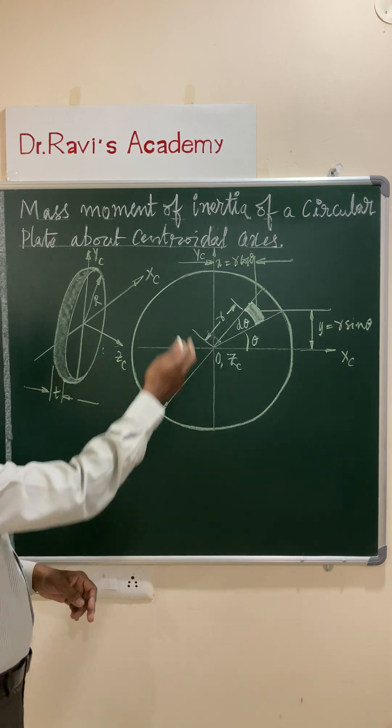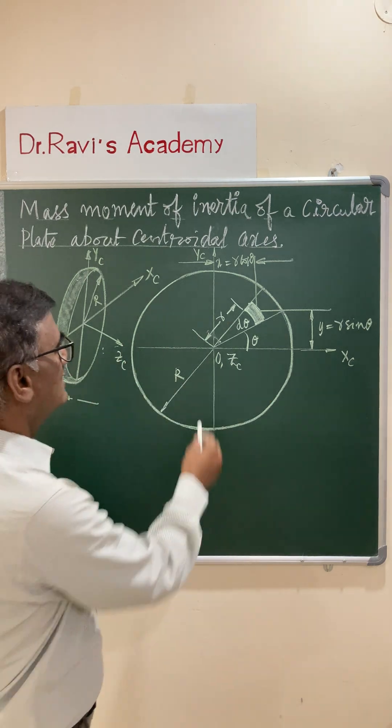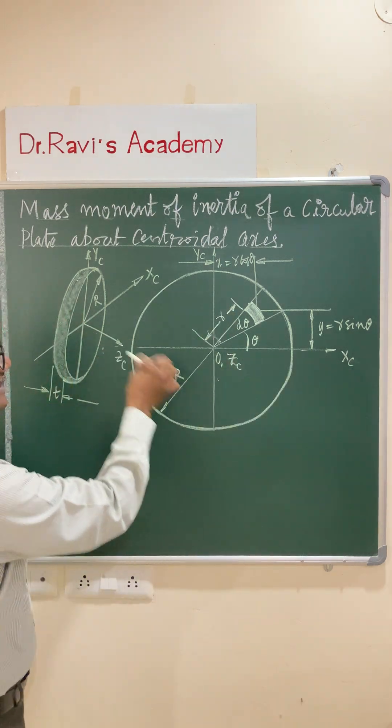You have certain thickness and it is a circular plate about centroidal axis. Centroidal x-axis, centroidal y-axis and centroidal z-axis also.